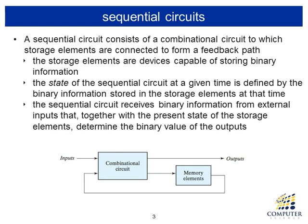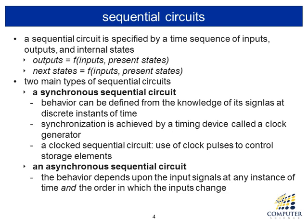A sequential circuit in general has two parts. The first part is called the combinational circuit, which we have studied so far, and the other part is called memory elements. The critical difference between a sequential circuit and a combinational circuit is that a sequential circuit has memory elements, where you can store information. Something stored in the past can be retrieved now. Whatever is stored in a memory element is called the state of the sequential circuit. The circuit has external inputs, external outputs, a combinational circuit part, and a memory part that remembers what happened in the past. A sequential circuit is specified by time-sequenced inputs, outputs, and internal states.